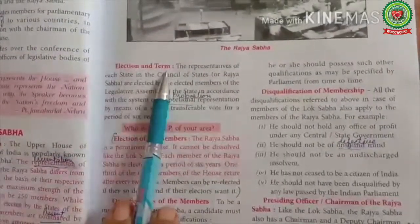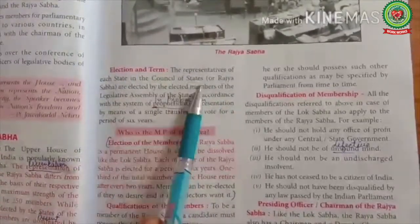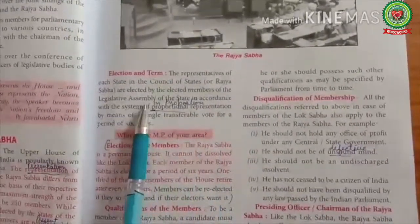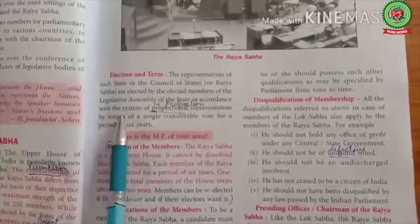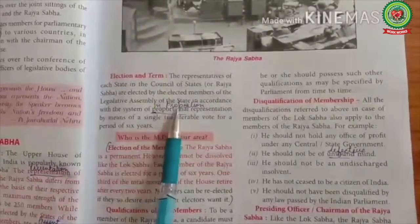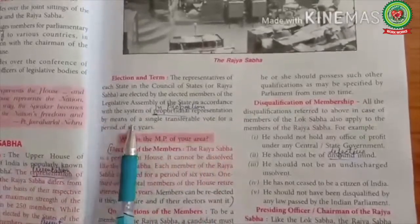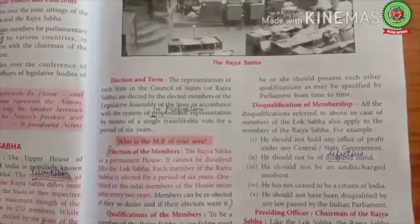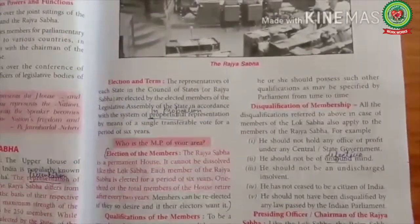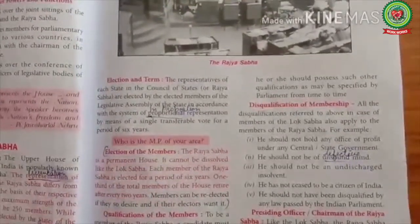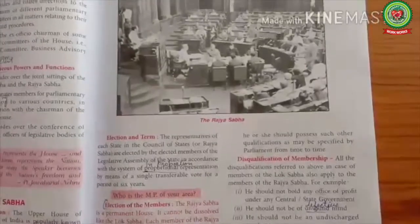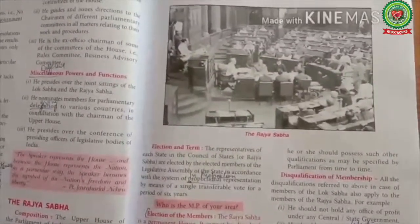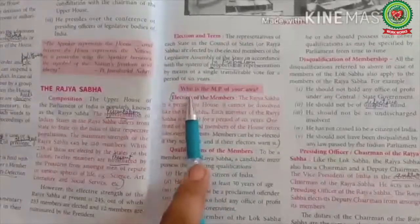Election and Term: The representatives of each state in the Rajya Sabha are elected by the elected members of the legislative assembly of the state, in accordance with the system of proportional representation by means of a single transferable vote, for a period of 6 years. Rajya Sabha MPs are elected by the electoral college of the elected members of the state assembly with a system of proportional representation by a single transferable vote.